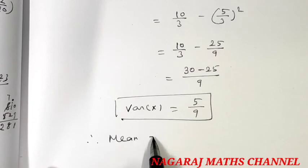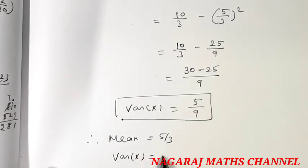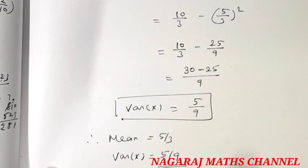Therefore mean is 5 by 3, variance is 5 divided by 9.